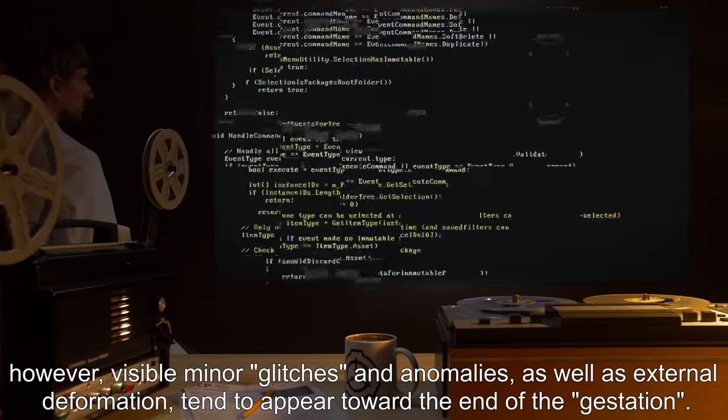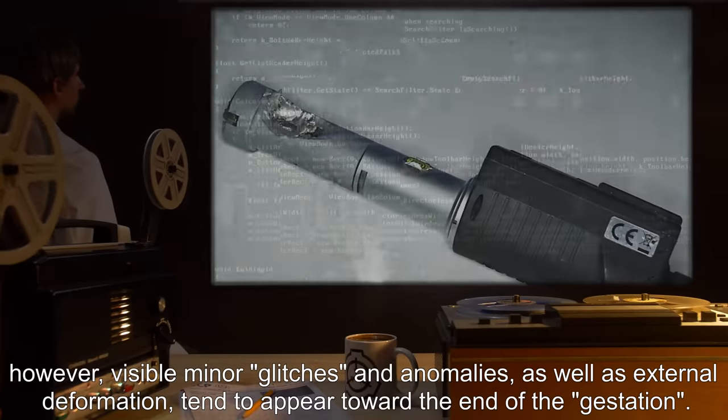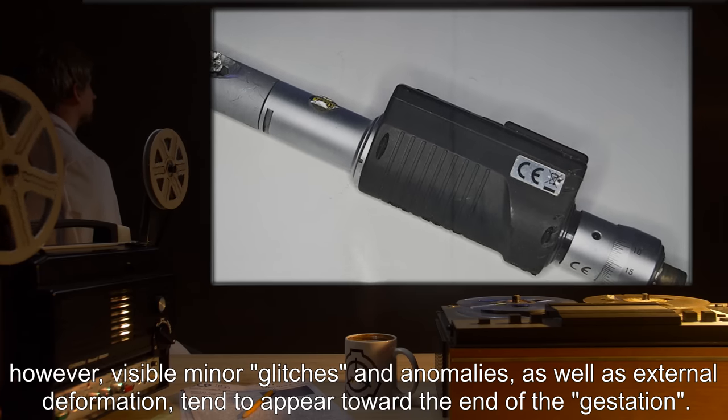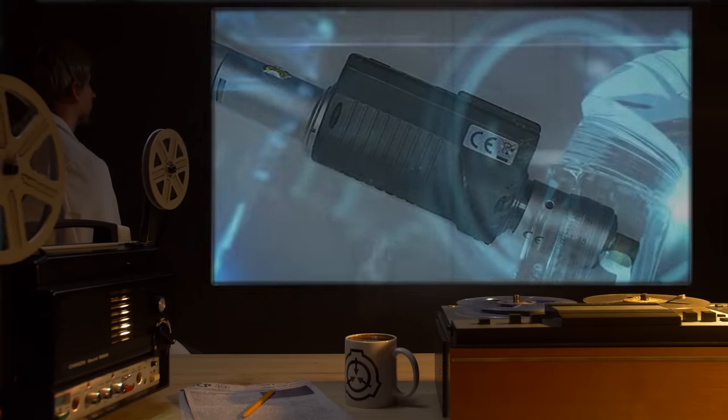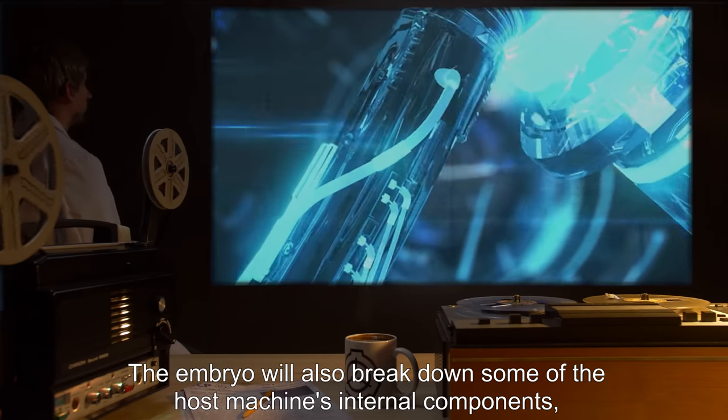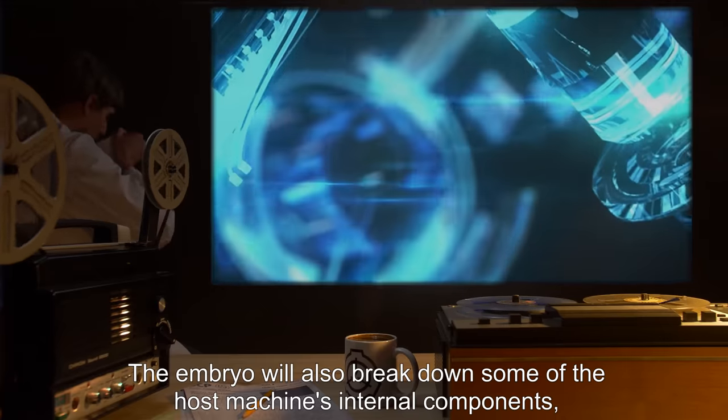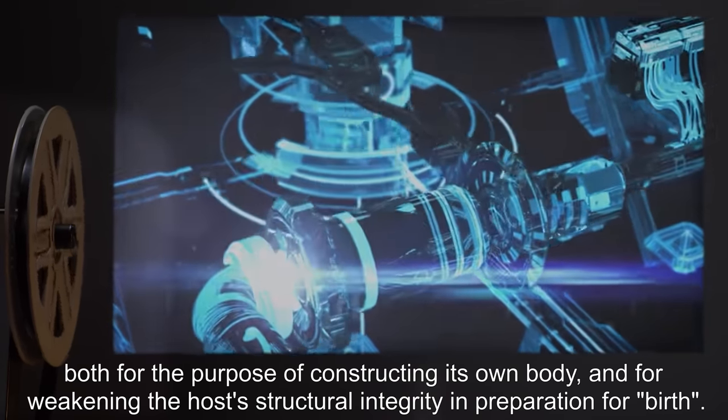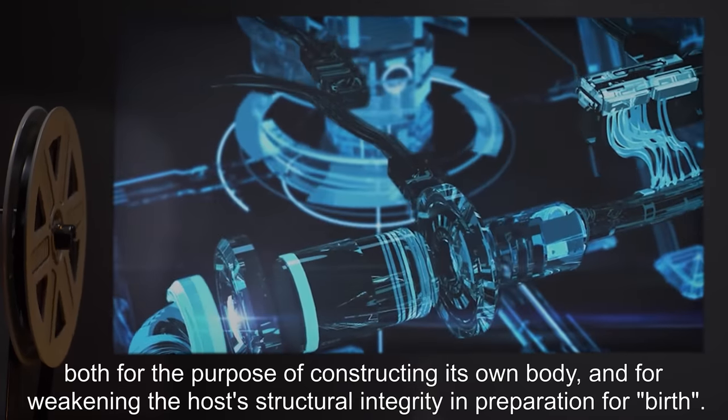However, visible minor glitches and anomalies, as well as external deformation, tend to appear toward the end of the gestation. The embryo will also break down some of the host machine's internal components, both for the purpose of constructing its own body, and for weakening the host's structural integrity in preparation for birth.